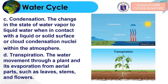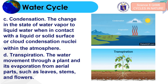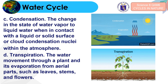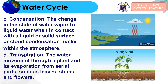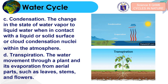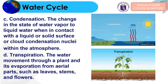The third part of the water cycle is condensation — the conversion of water vapor to liquid water when in contact with a liquid or solid surface, or cloud condensation nuclei within the atmosphere. Transpiration is the water movement through a plant and its evaporation from aerial parts such as stems, leaves, and flowers.